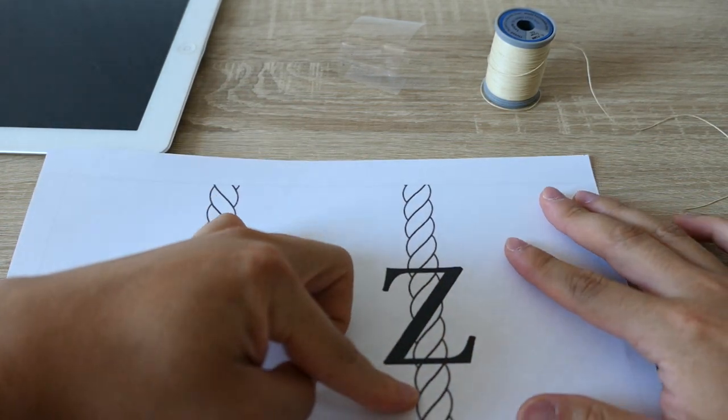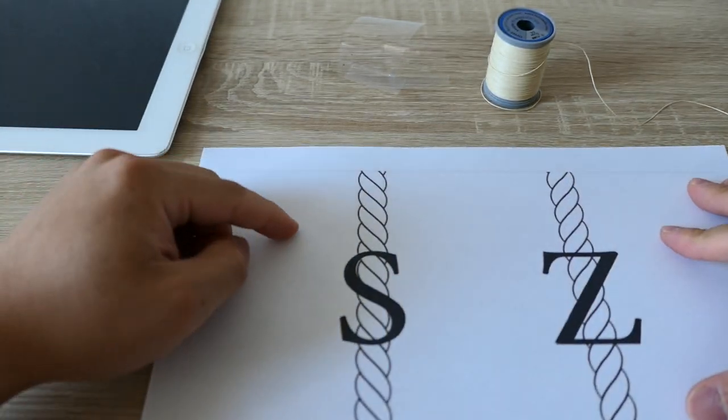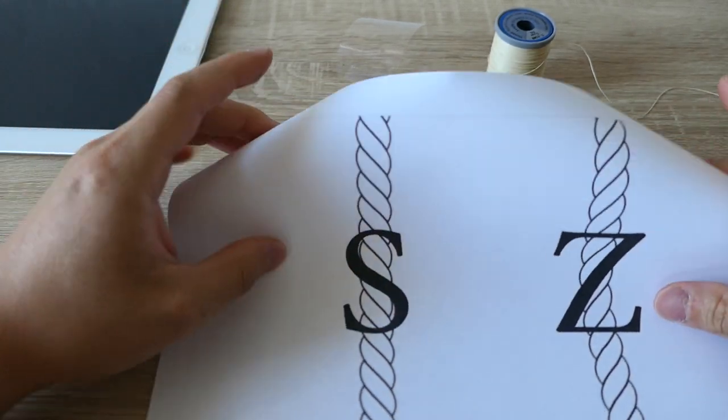So the twist of the thread, if you take a look at your thread, this is your thread. And if you see there's a line like this, this way, it's a Z-twist. And if there's a line like this on your thread, it's an S-twist. So that's about it.